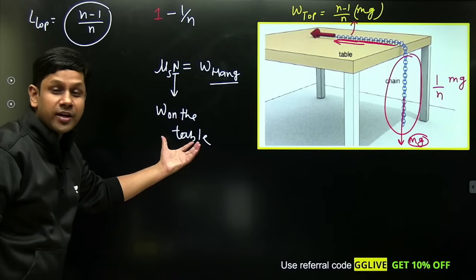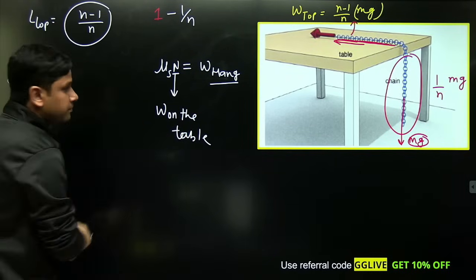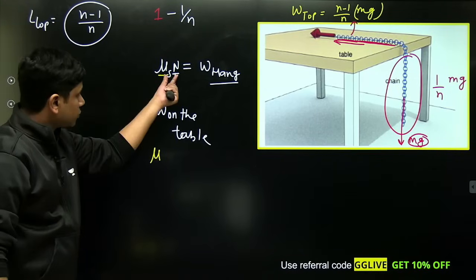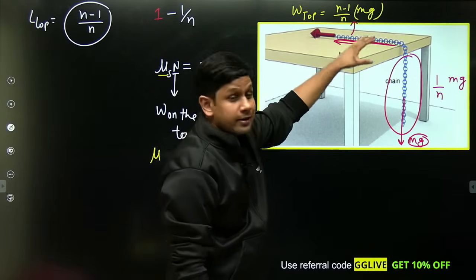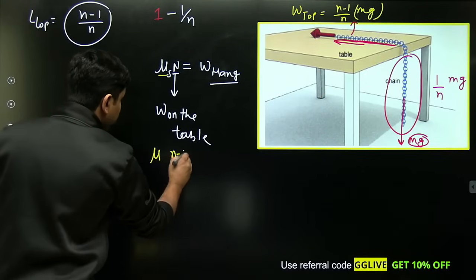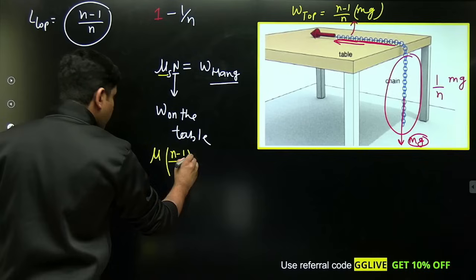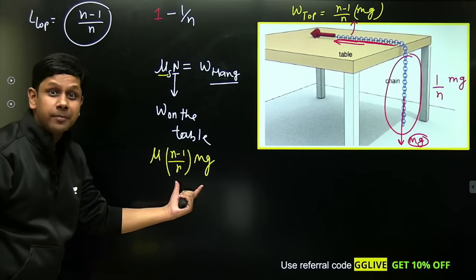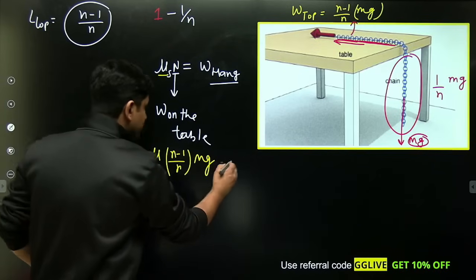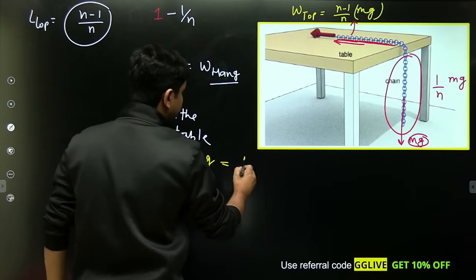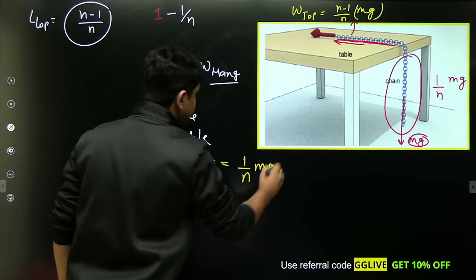Now this is the equation where you put everything together. It becomes: μ × normal force, where normal force comes from the part on the table, so normal force is (n-1)/n × mg, equals to weight hanging which is (1/n) × mg.